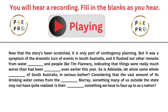Now that the story has been scratched, it is only part of contingency planning. But it was a symptom of the dramatic turn of events in South Australia, and it flushed out other remarks from water academics and people like Tim Flannery, indicating that things were really much worse than had been foreshadowed even earlier this year. So is Adelaide — let alone some whole regions of South Australia — in serious bother, considering that the vast amount of its drinking water comes from the beleaguered Murray?